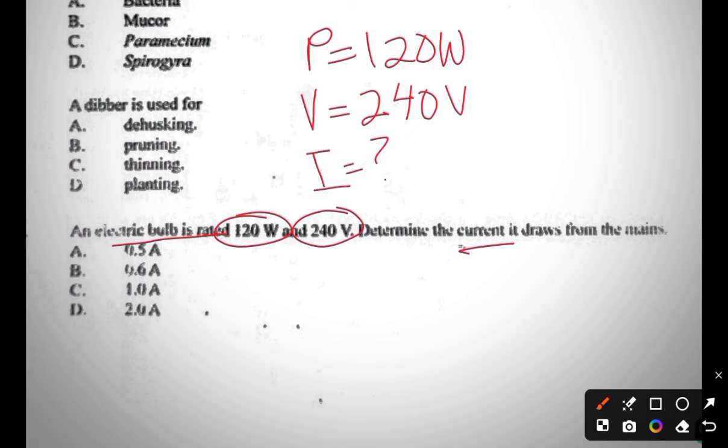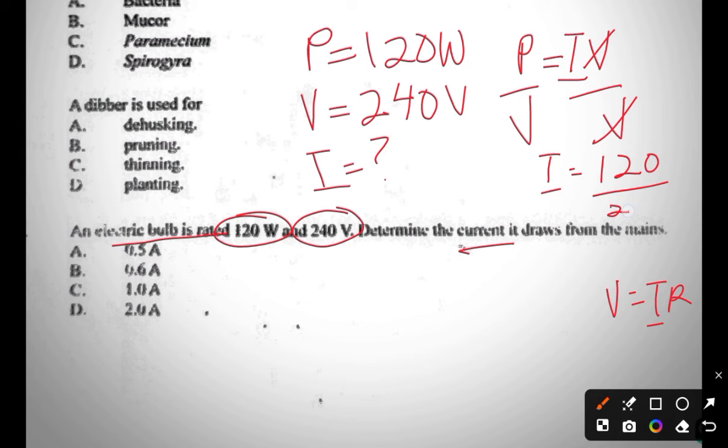The formula I'm using for this calculation is P equals I times V. I know a lot of students are aware of V equals IR, so we can add this as well. P equals I times V. We need the current, so we need to make I the subject. Divide both sides by V, so V cancels V. So I equals P is 120 over V is 240.